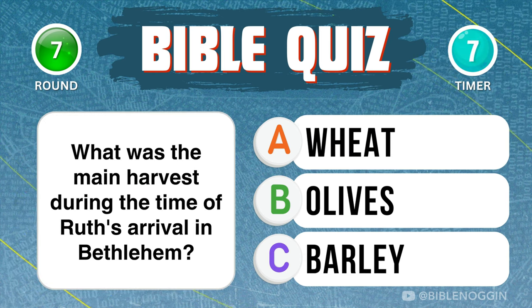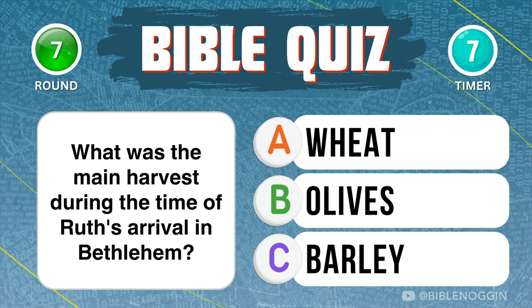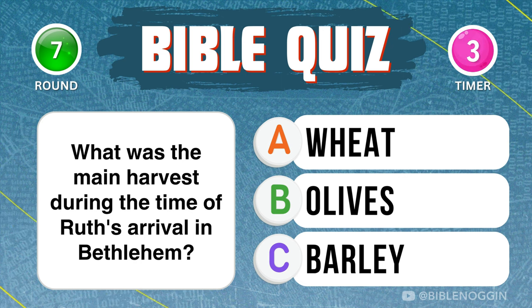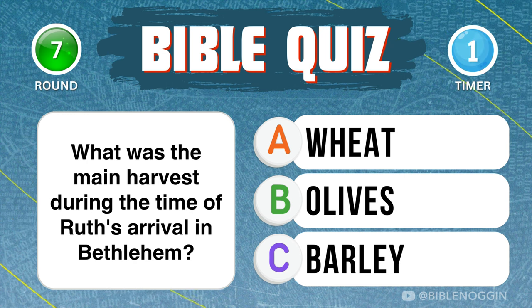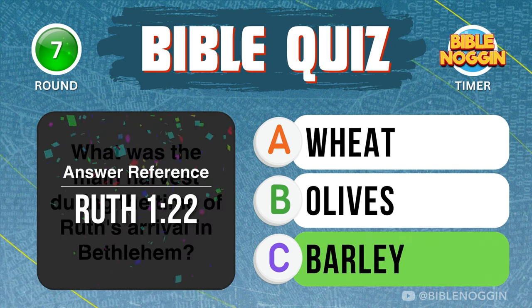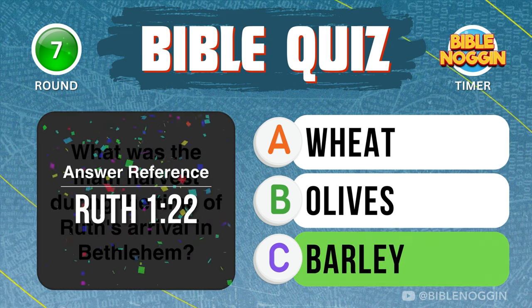Question 7: What was the main harvest during the time of Ruth's arrival in Bethlehem? Barley — found in Ruth chapter 1, verse 22.